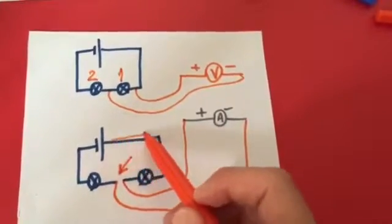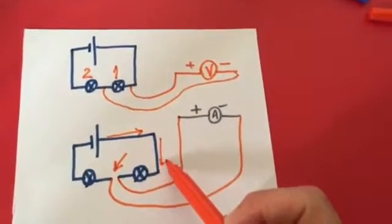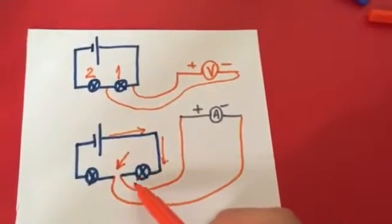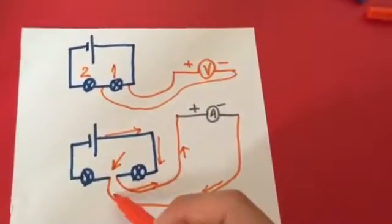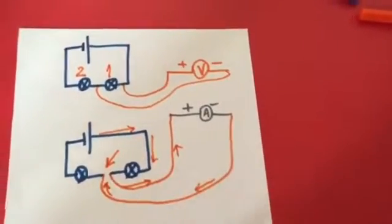So, the current would be flowing in this direction, down the ammeter, down the bulb, following the ammeter, and you will see that the ammeter now is part of your circuit, and this is called a series connection.